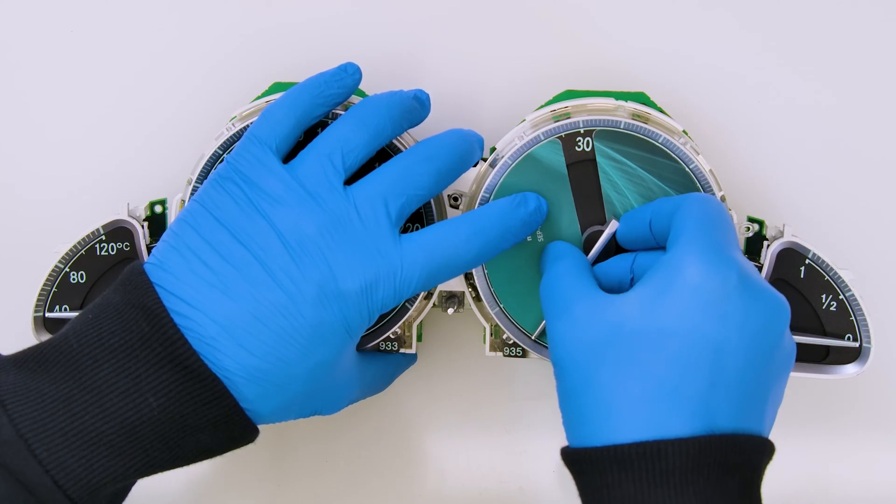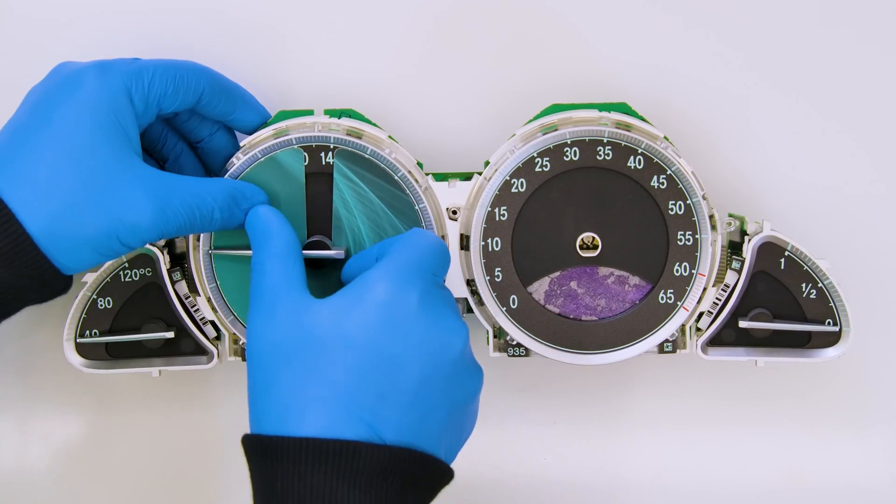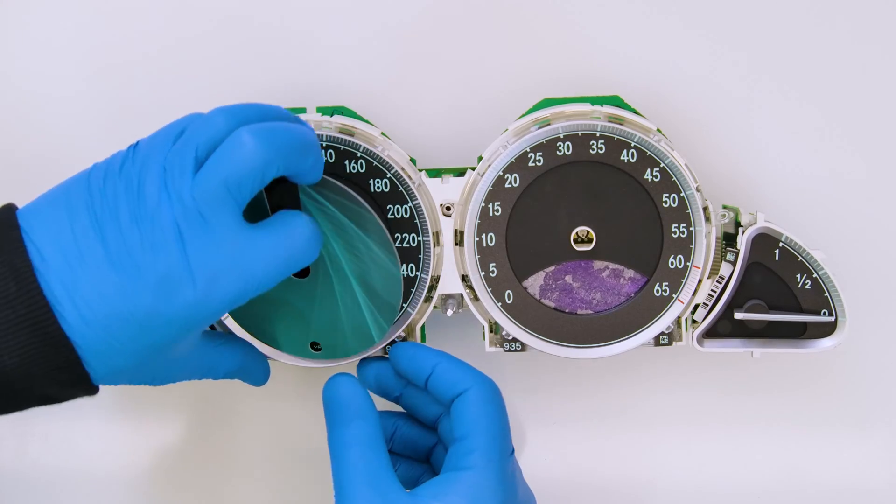Fit the gauge face protective disc and take out the speedometer and RPM needles, gently rotating and pulling them.